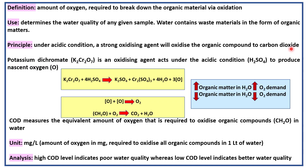Chemical oxygen demand, or COD, is the amount of oxygen required to break down organic material via oxidation. COD can be used to determine the water quality of any given sample, since water contains waste materials in the form of organic matter.